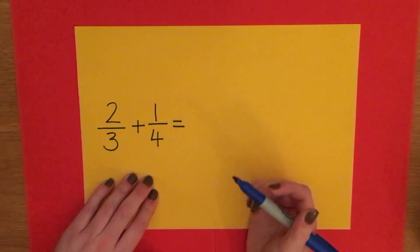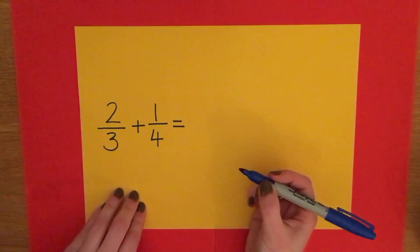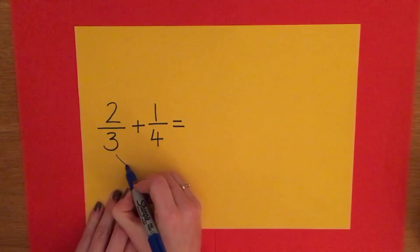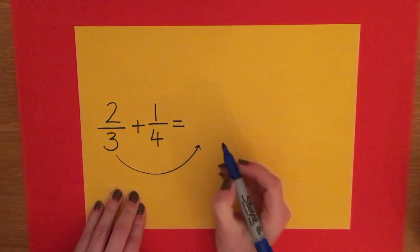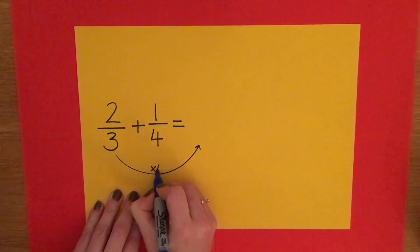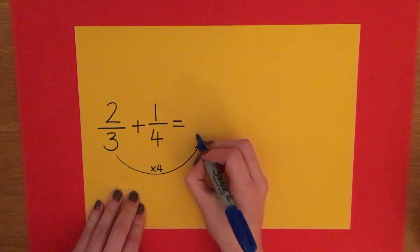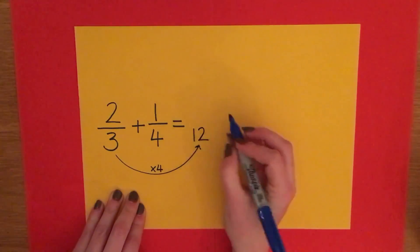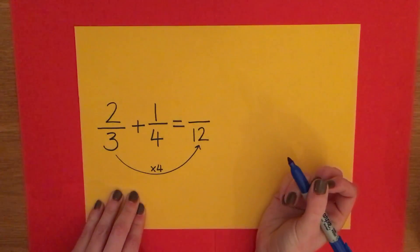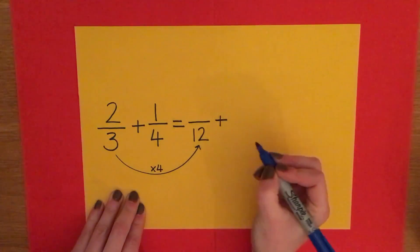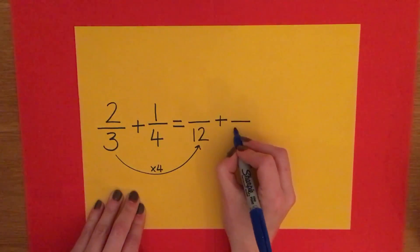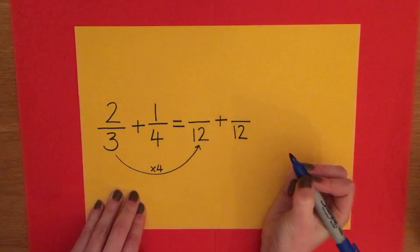So I'm going to change them into equivalent fractions by doing this. So I'm going to multiply the three by four. Three times four makes twelve, and they're both going to end up with twelve on the bottom so that we can add our fractions together.